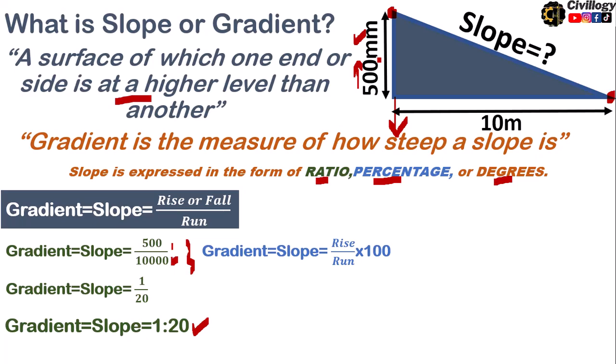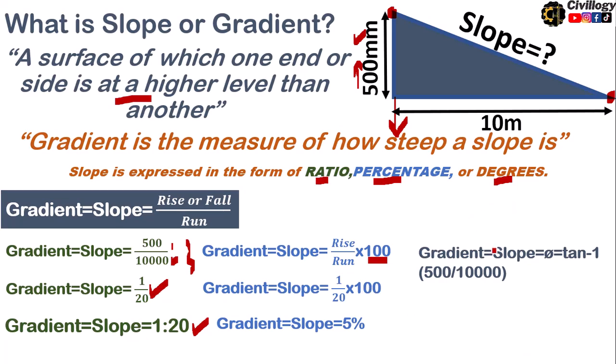Now, it can also be expressed in the form of percentage if you write the formula as rise divided by run multiplied by 100. Again, the rise is 1 divided by 20. As you can see over here, the simplified form of this ratio and we will get this slope. Slope is actually 5%. Similarly, you can write this in the form of degrees. As you can see over here, this is the angle and it can be calculated as tan inverse of 500 divided by 10,000. You will get the slope in the form of degrees. So there are three basic methods to write slope: in the form of ratio, percentage or degrees.